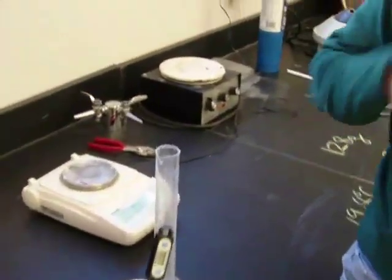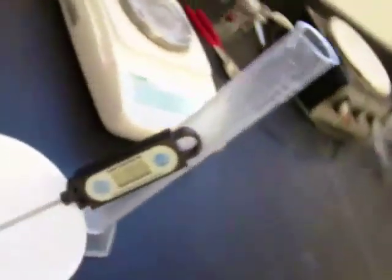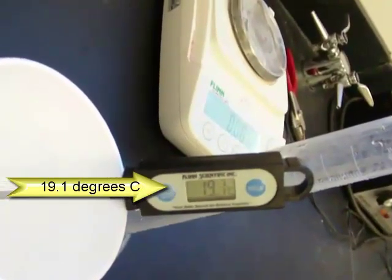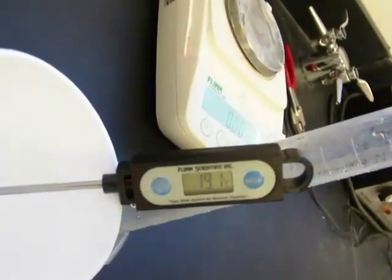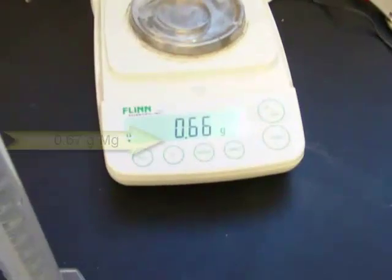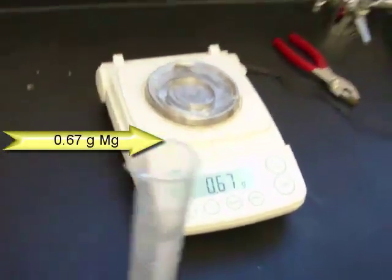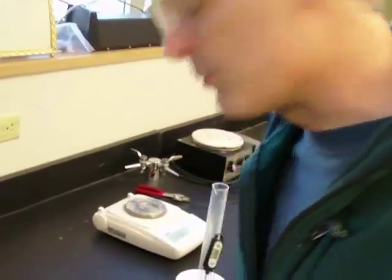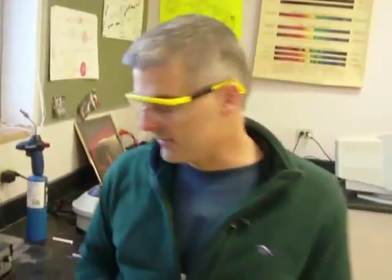The original temperature is 19.1 degrees Celsius. I'll write that down. Now I have my magnesium. I need to know its mass, so I'll put it on the scale. Its mass is 0.67 grams. I'll put this in my data table, and then add the magnesium to the acid to see what happens.